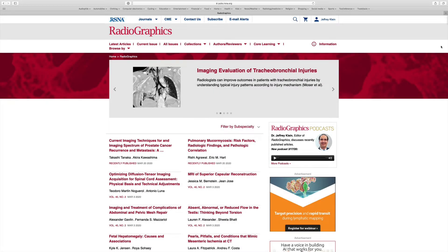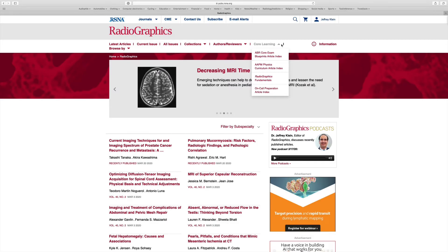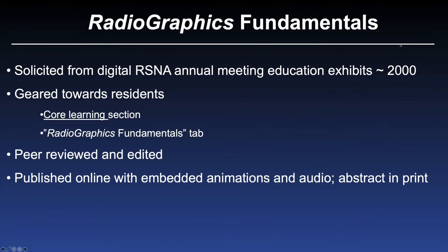Let's move on to the resources for members in training — our resident and fellow members. This can be found under the Core Learning tab of the journal homepage. When we click on that, you'll notice there are four resources available. We'll start with Radiographics Fundamentals — slide presentations solicited from the annual RSNA meeting education exhibits, of which more than 2,000 are presented at each annual meeting. These are specifically geared towards residents. They can be viewed on the journal page or downloaded for offline viewing, and extended abstracts are published in print form in the print journal.